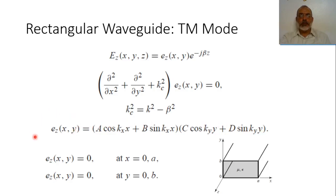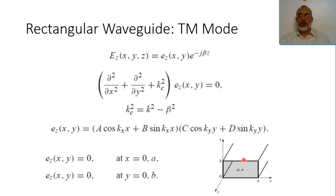In the present case for transverse magnetic mode, the boundary condition can be applied directly on Ez, on the longitudinal component. The tangential electric field on the walls of the perfect electric conductor sheets would be 0. So Ez at x equals 0, corresponding to the left plane, would be 0. Similarly, Ez at y equals 0, corresponding to the bottom plane, would be 0. In all cases, the electric field Ez is tangential on these four planes.